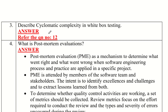The third method is to find cyclomatic complexity by means of predicate nodes. Cyclomatic complexity, represented as V(G), is equal to P plus 1, where P is the number of predicate nodes. Predicate nodes are conditional nodes — if a condition is true it goes to one branch, if false it moves to another branch.